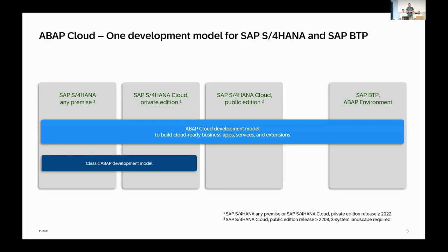In Steampunk — the ABAP platform in the cloud without application layers on top — we are only able to use ABAP Cloud for certain reasons. Because we are in the cloud, we need to be cloud-ready, and classic ABAP, because of 30 to 40 years of history, is not completely cloud-ready. Therefore we have to provide this ABAP Cloud development.